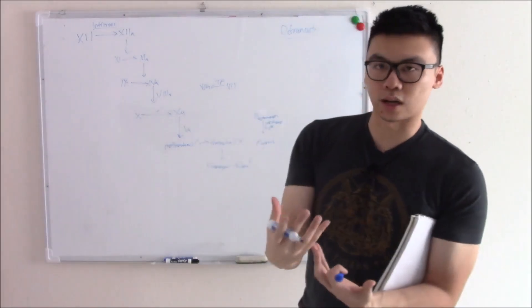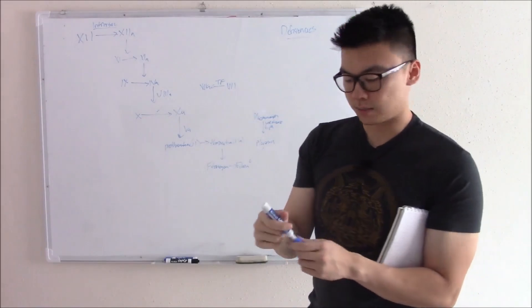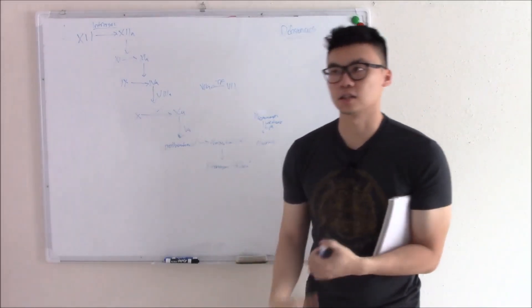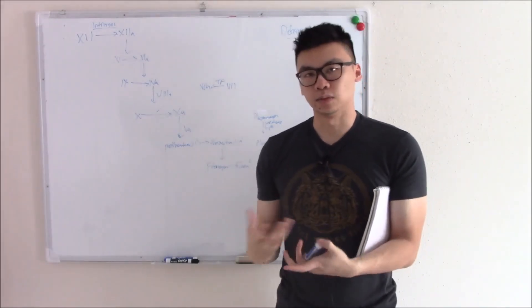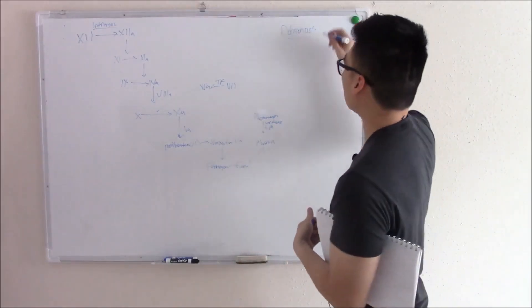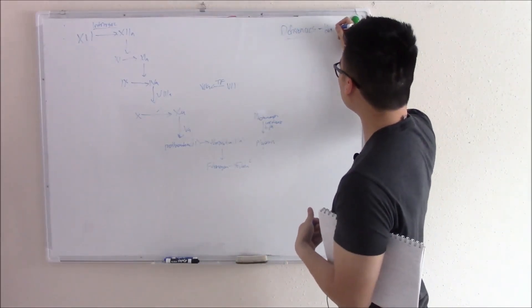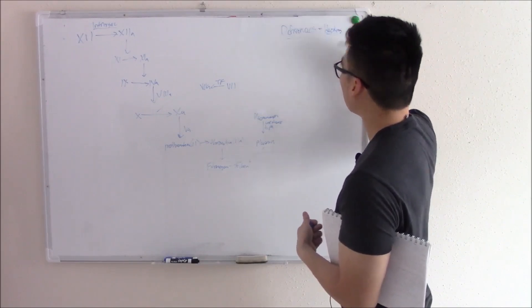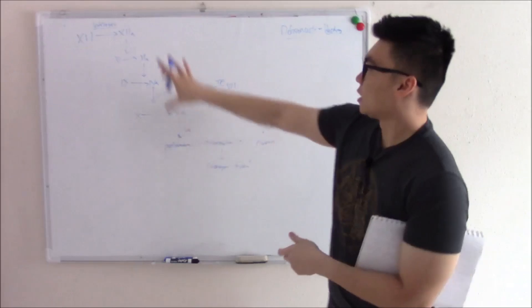When you hear deficient coagulation factors, you'll have signs like bleeding. Because we're talking about coagulation factors, you're going to have signs like late bleeding, deep bleeding, bleeding in your joints, bones. That's just a recap of what's seen when you have deficiency. Here's our nice pathway.